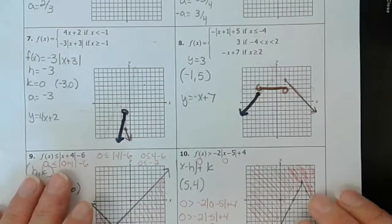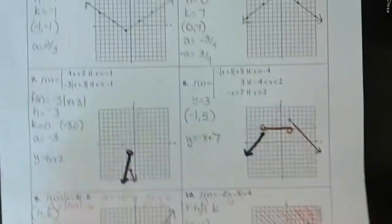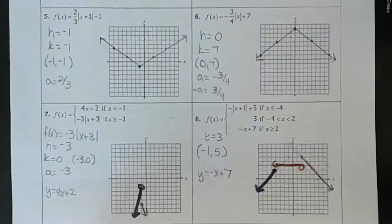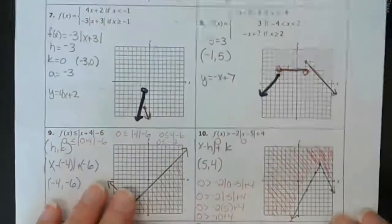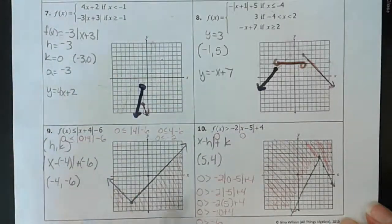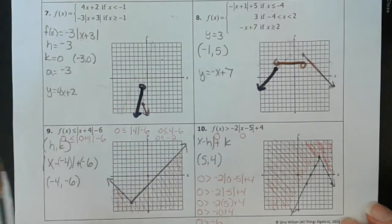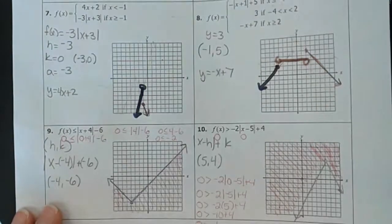That is vertex form of absolute values. We've combined it with piecewise and inequalities, and hopefully that gives you a little bit shorter, quicker way to do this.